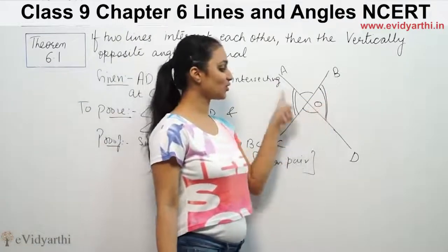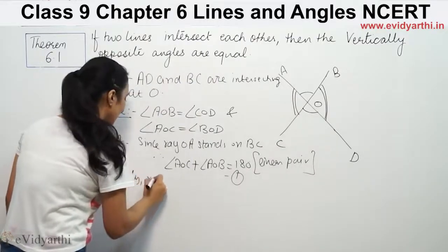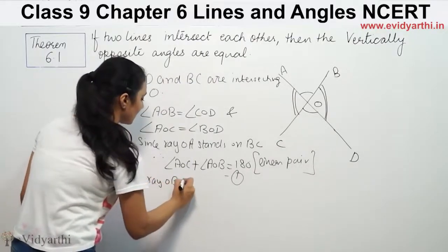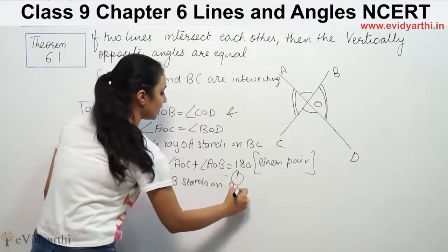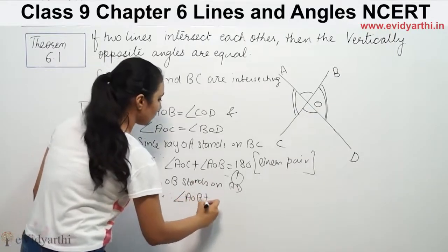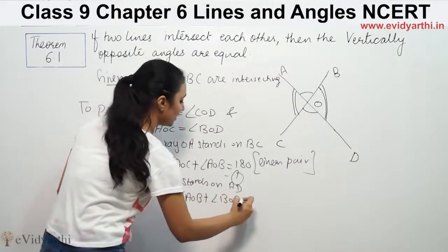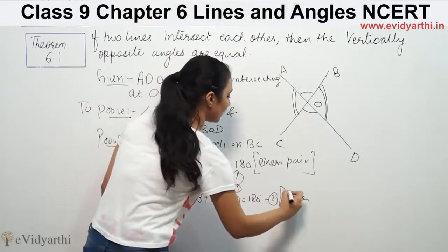Similarly, OB stands on the line. Therefore, angle AOB plus angle BOD is equal to 180 degrees. This is also a linear pair.